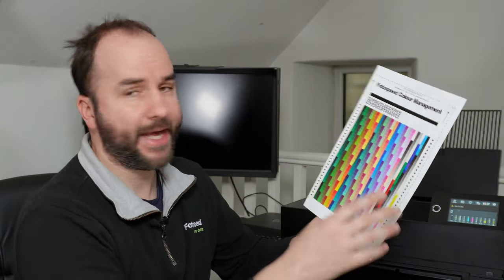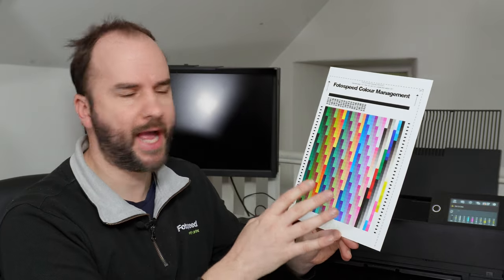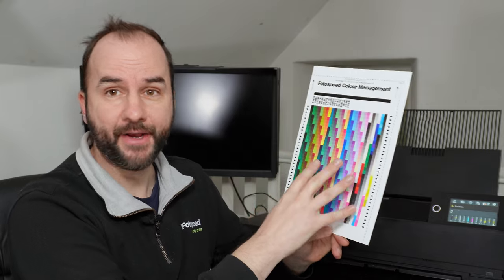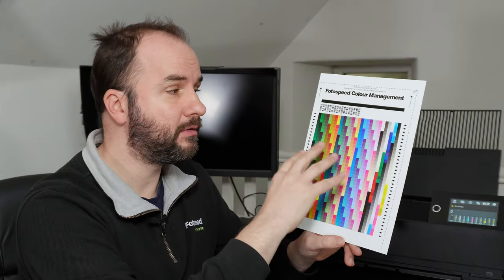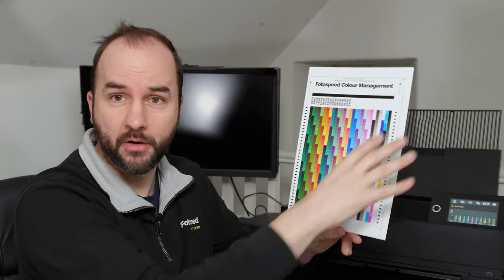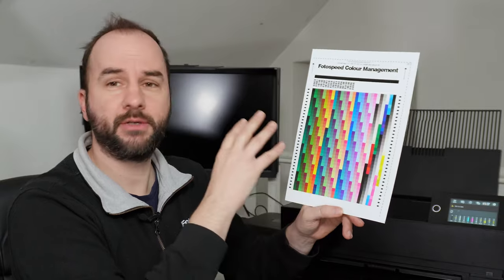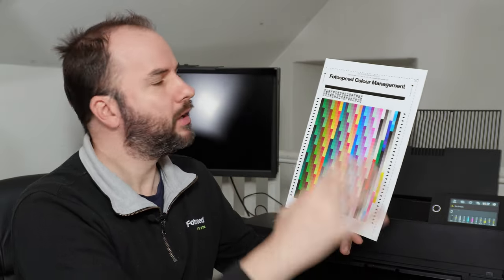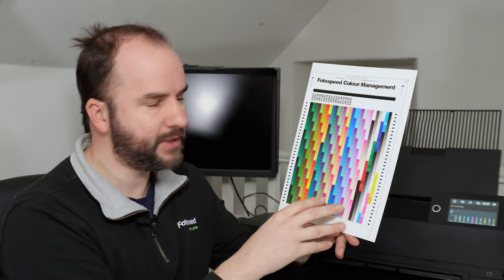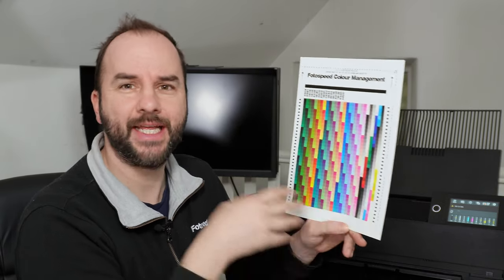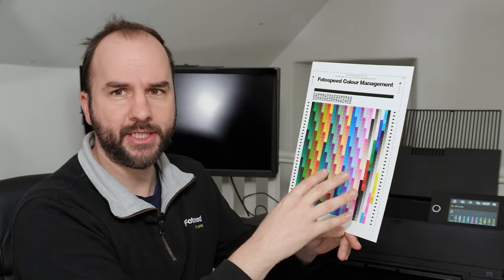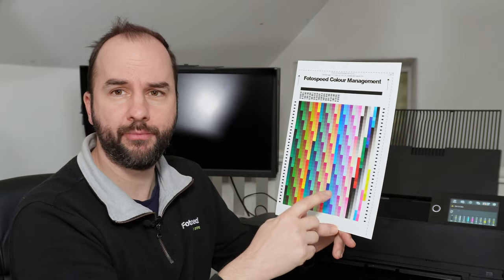To do that, we need to print off a chart like this — our colour management chart. It's got 924 patches on it, and when we print this off we can scan it on a spectrophotometer, which gives us an idea of how your printer produces colour. It then makes alterations based on the colour information and paper choice, and saves that data within an ICC profile file that you can use when you commit to print. We need to print it through software called the Adobe Color Print Utility, and we need to print it without any colour management being affected.